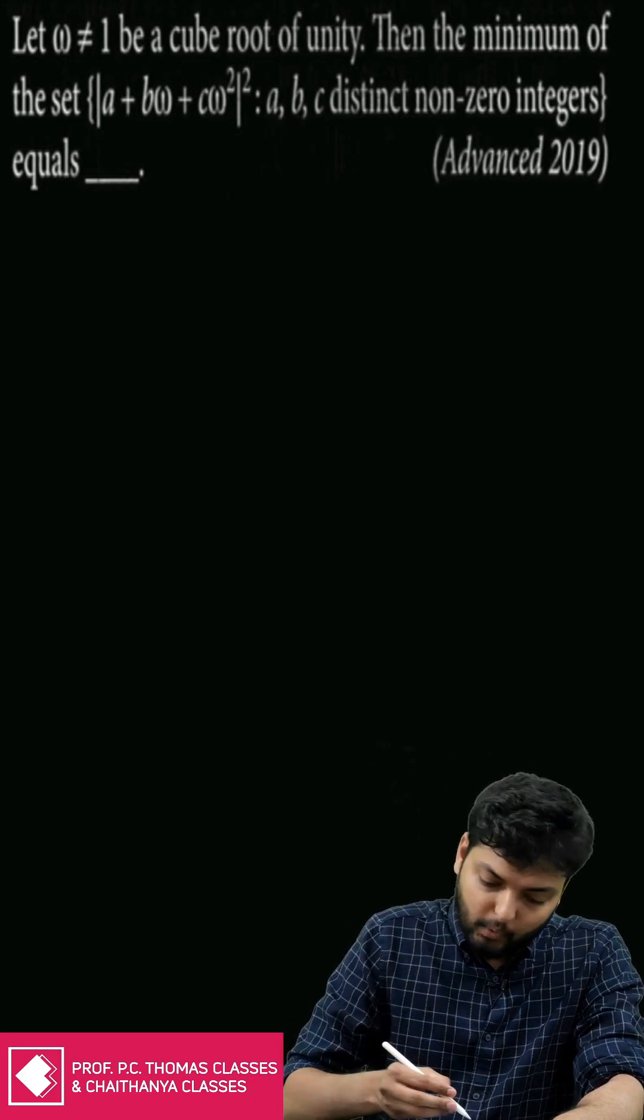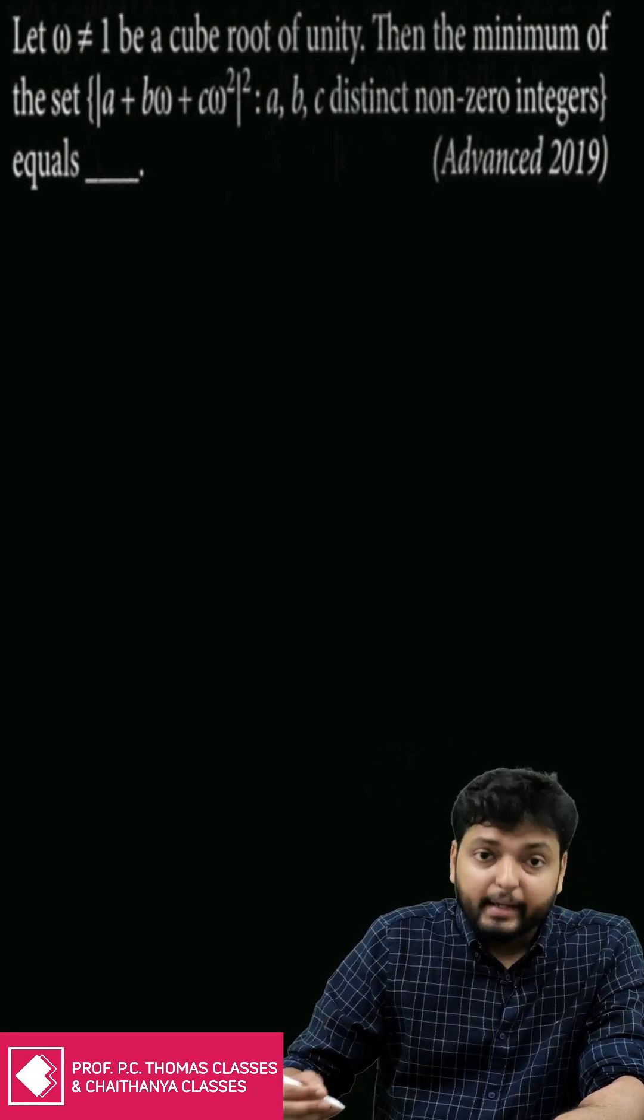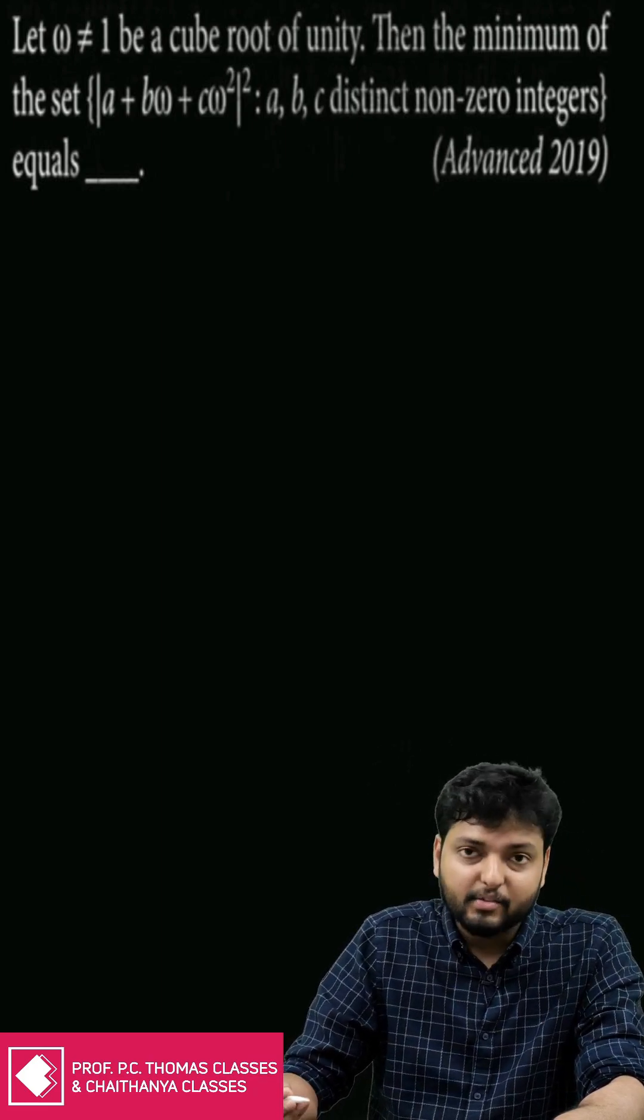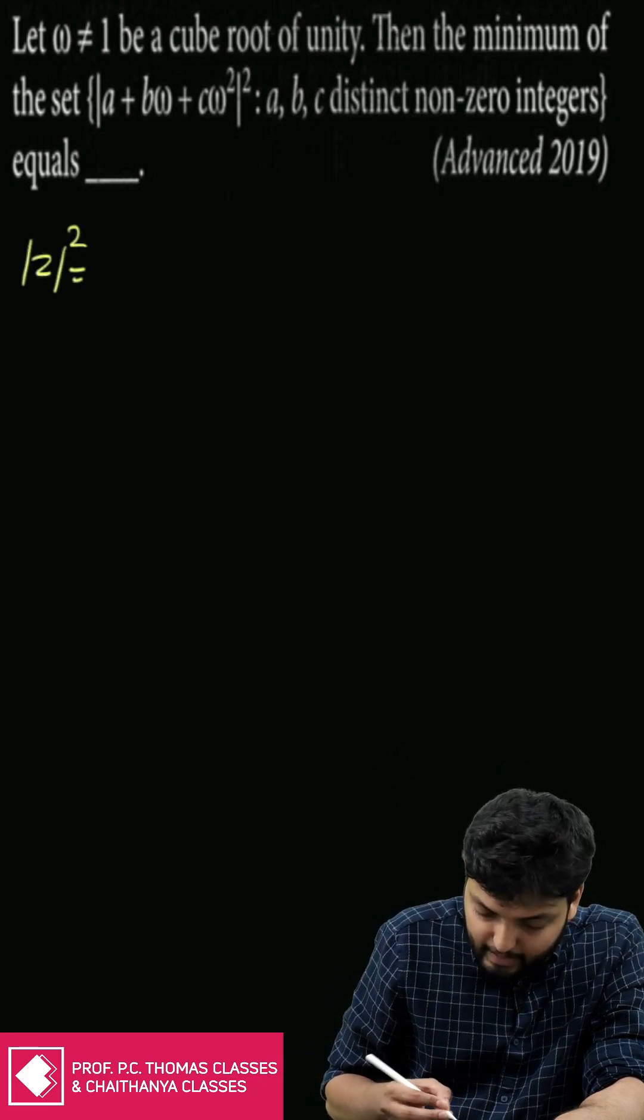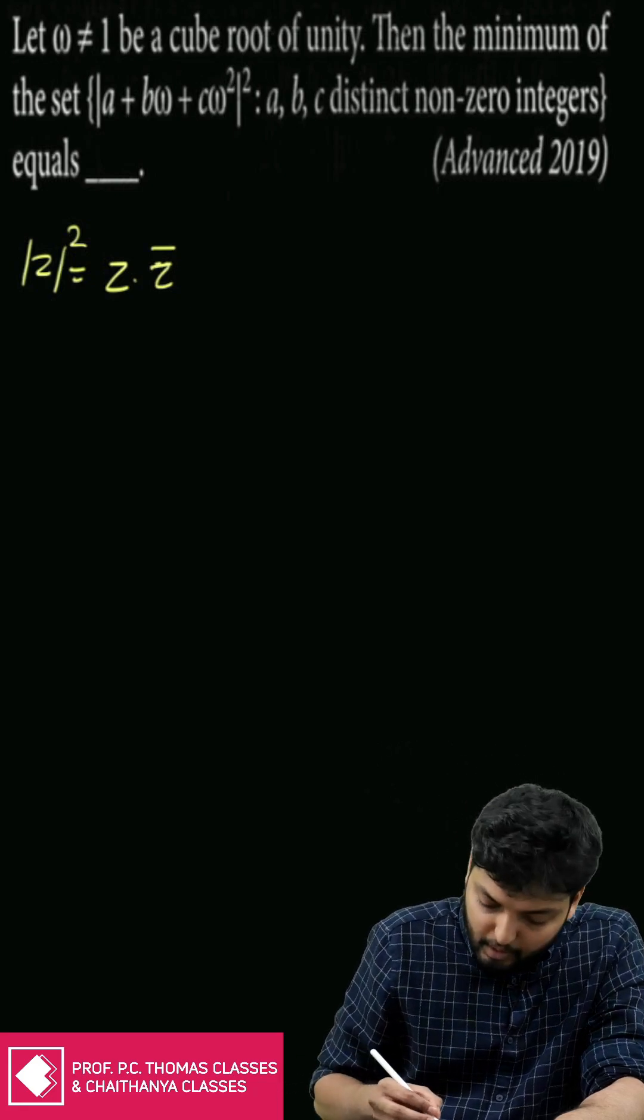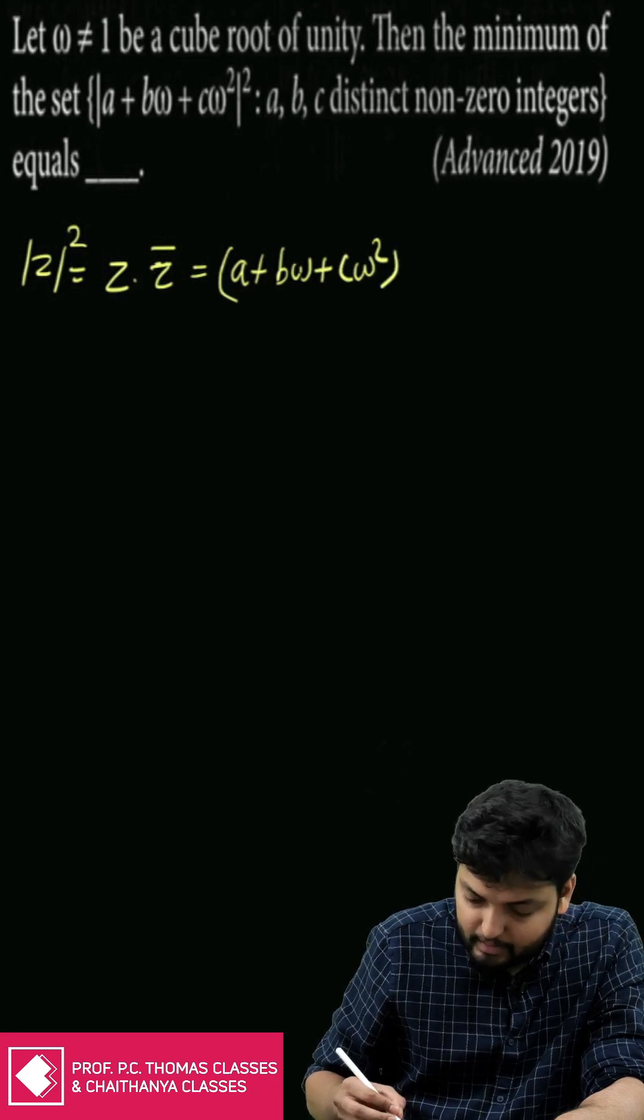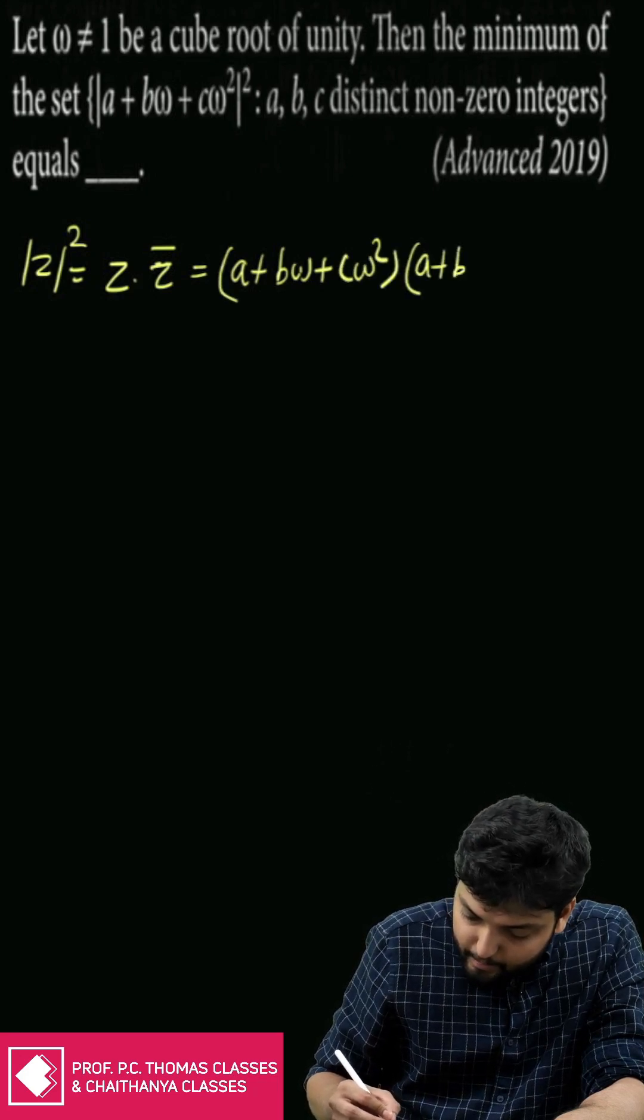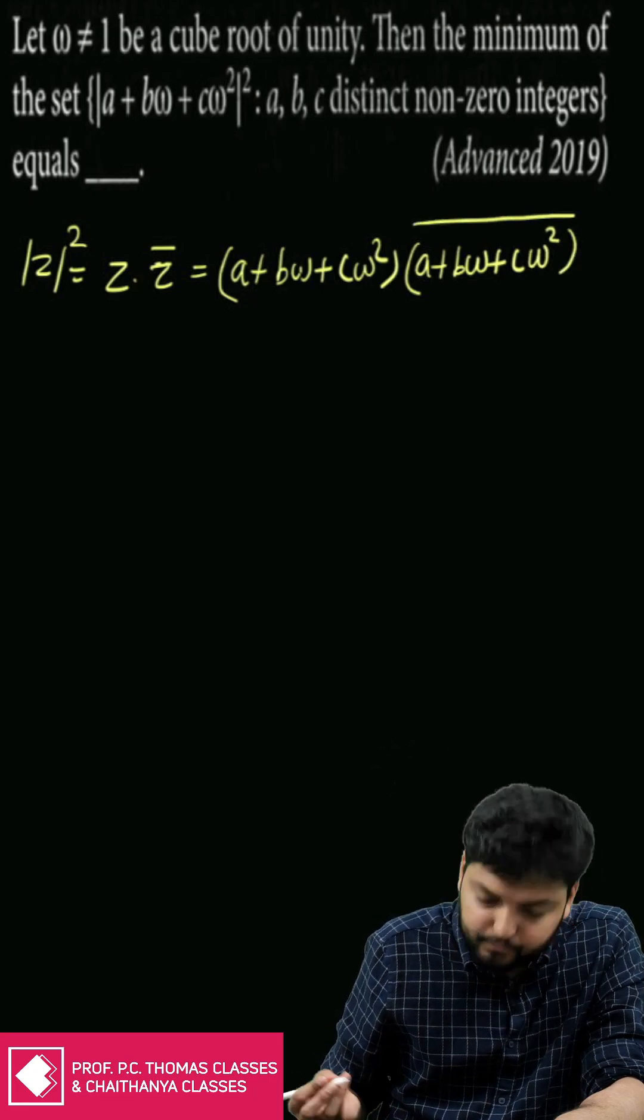For the benefit of viewers who are seeing this video for the first time, let me redo the steps quickly. I have to find out modulus square, so I can take Z times Z conjugate which equals (a + bω + cω²) into (a + bω + cω²) the whole conjugate.